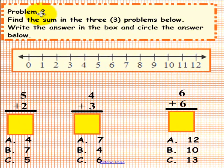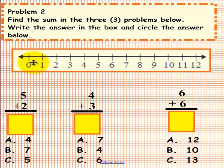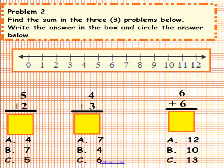Problem 2. Please do not pick up a pen until you are asked to do so. Find the sum in the three problems below. Write the answer in the box and circle the answer below. You will notice we have again provided for you a number line. Please add up the problem here, here, and here. Place your answer here, here, and here, and circle the correct answer below. Pick up a pen to solve this problem.